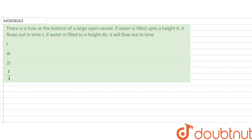The question says: There is a hole at the bottom of a large open vessel. If water is filled up to height h, it flows out in time t. If water is filled to a height 4h, it will flow out in time - how much?